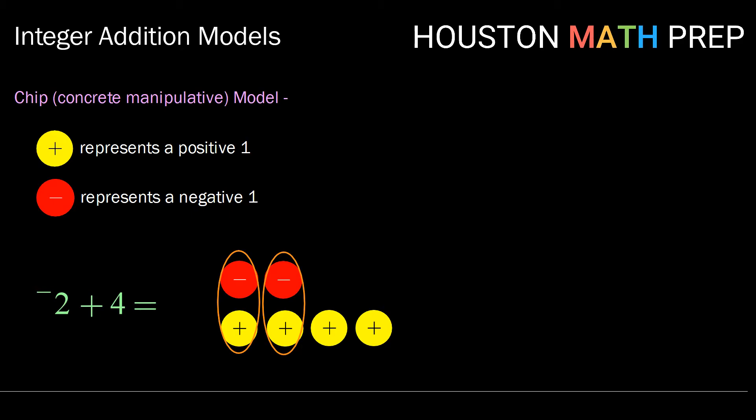So here, when we remove our groups of zero, we have positive two or two yellow chips left over. So negative two plus four is two.